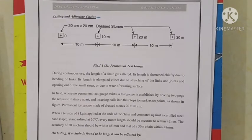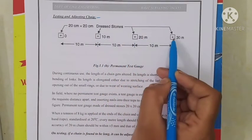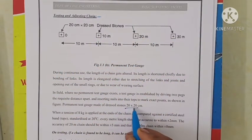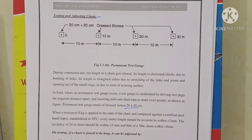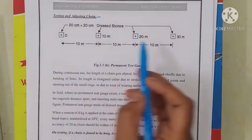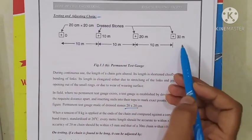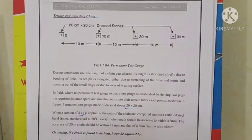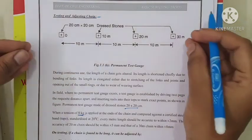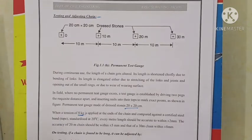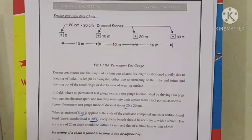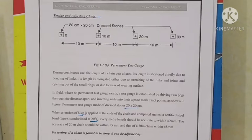Permanent test gauges are made of dressed stone of 20×20 cm in the field. The chain is placed along it and a tension of 8 kg is applied at both ends at a standardization temperature of 20 degrees Celsius. Every meter length should be accurate within plus or minus 2 mm. For a 20 meter chain the accuracy should be within plus or minus 5 mm.